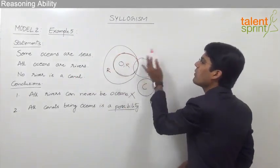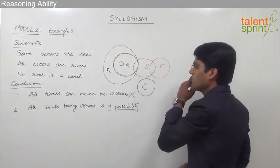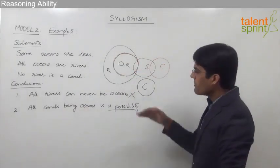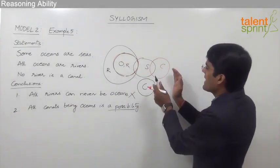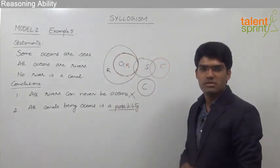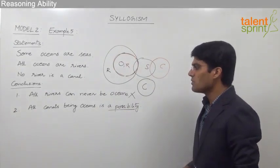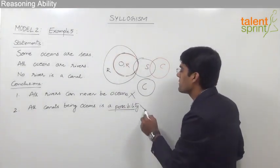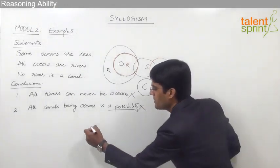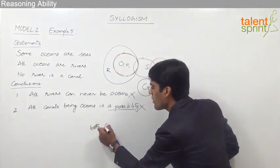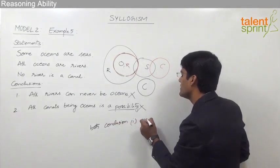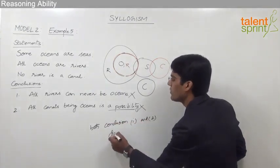Canals must always be outside rivers. So wherever we place canals, there is no overlapping between rivers and canals. Since canals cannot come inside the rivers, all canals being oceans is never possible. Therefore, conclusion number two is also false. Our answer for this question is that both conclusion 1 and conclusion 2 do not follow the given statements.